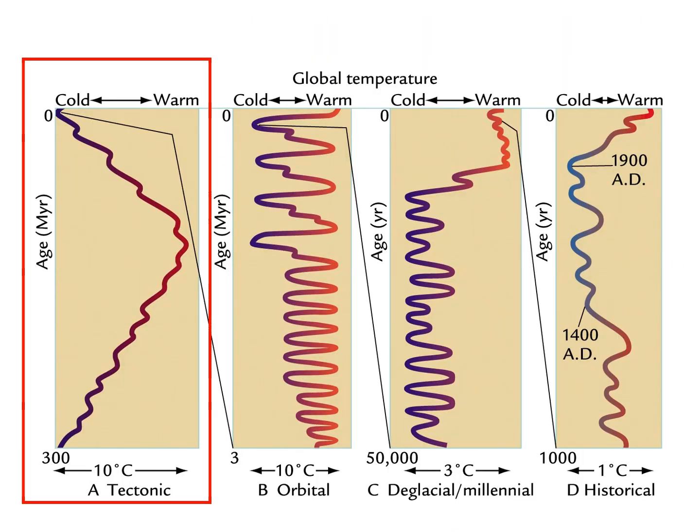That's just an introduction to some of the proxies we use and how we find out about past climates. What we're going to do now is look at some examples, and the first one is really long-term climate change - over millions or tens of millions of years.